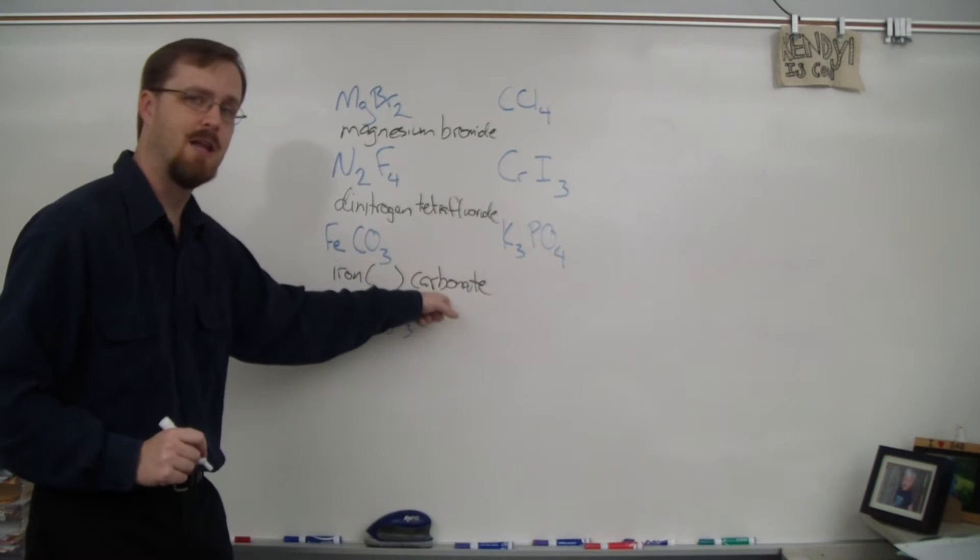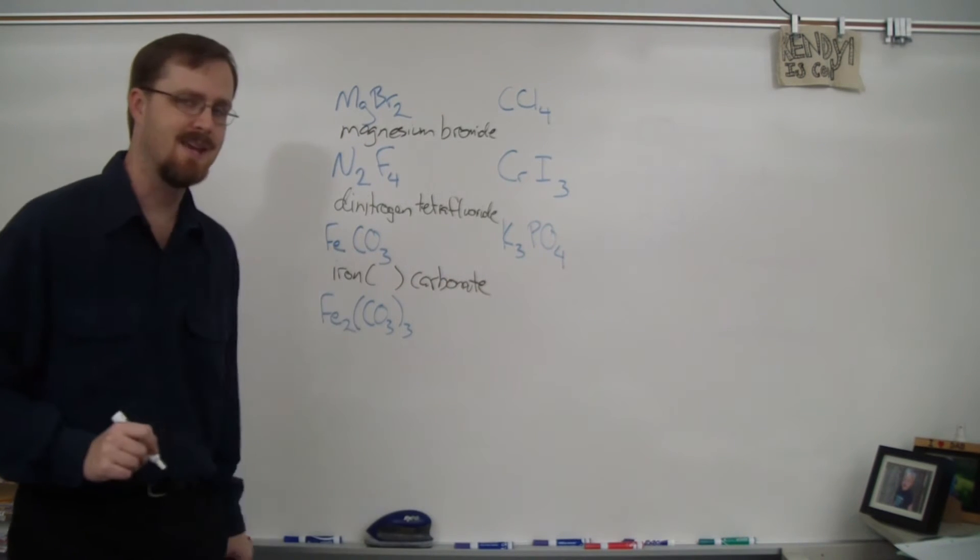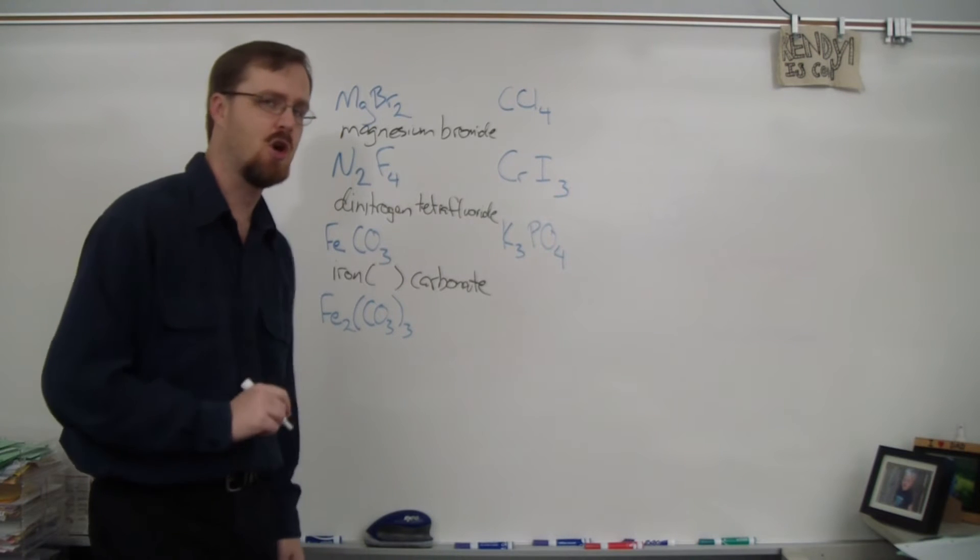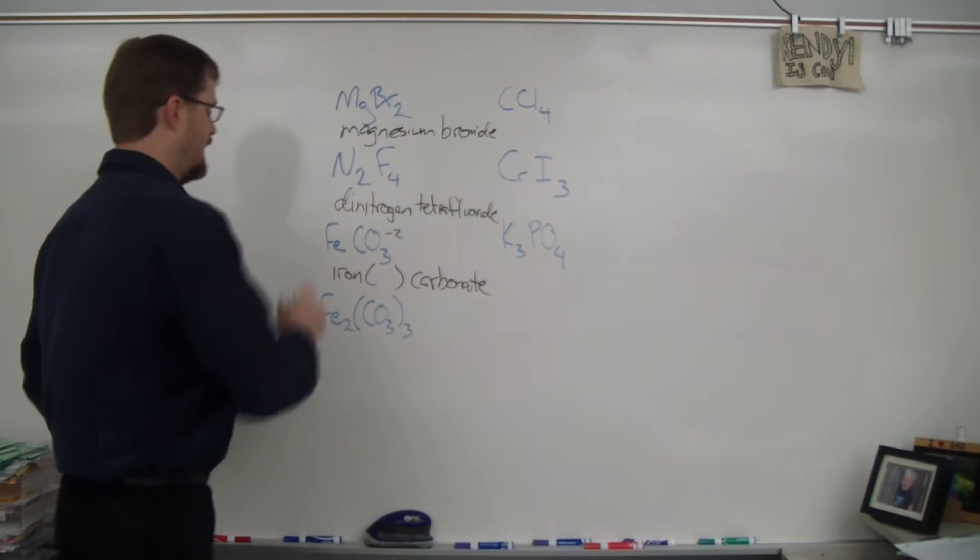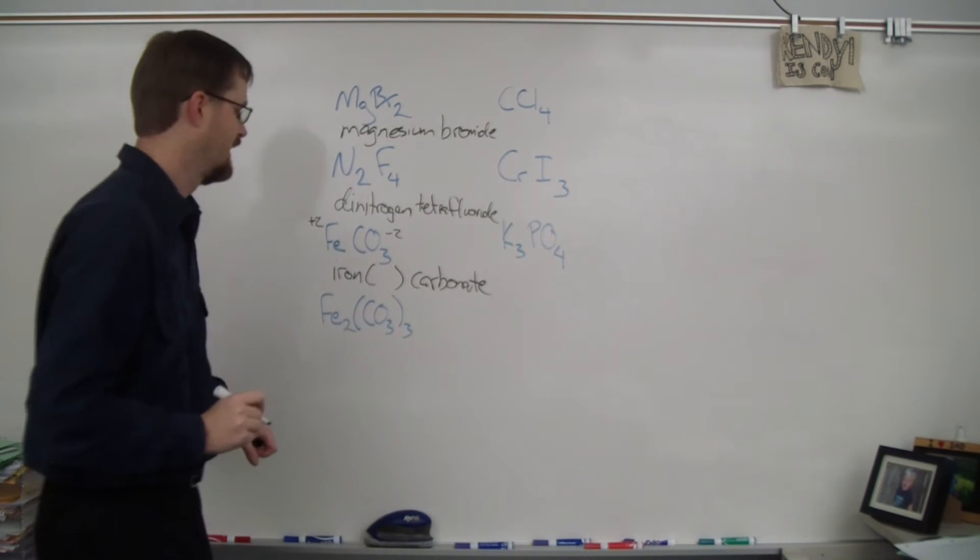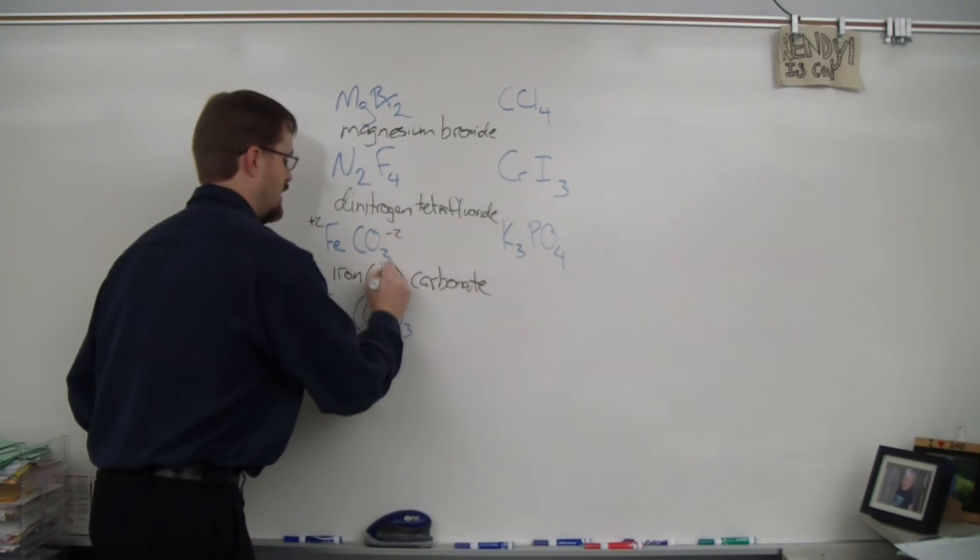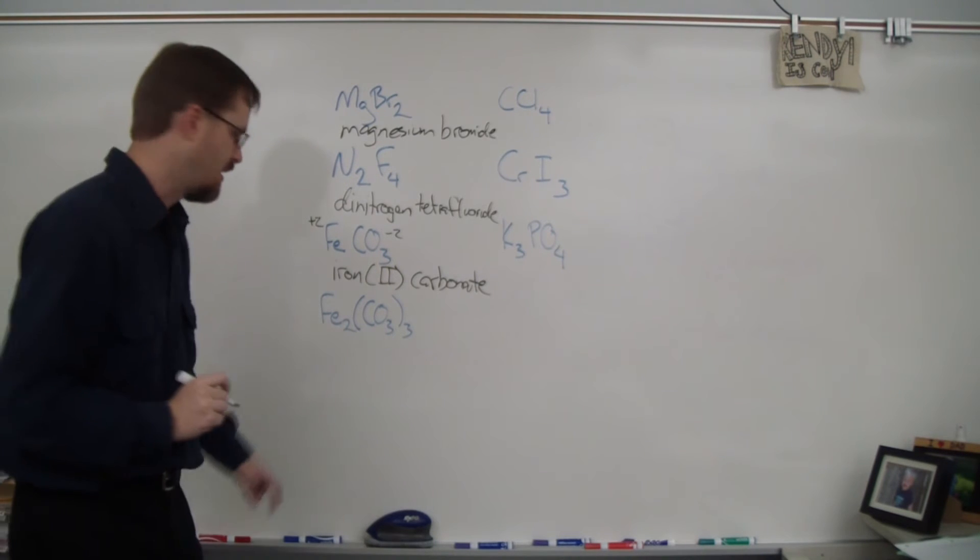Now how do we figure it out? We're going to figure it out by looking at our negative ion. Carbonate has a charge of negative 2. So in order to balance that out, iron here must be positive 2. So this is iron II carbonate.